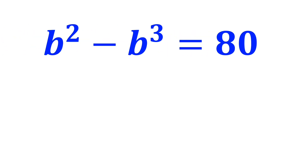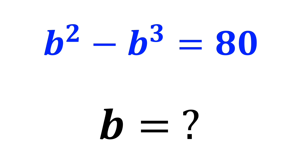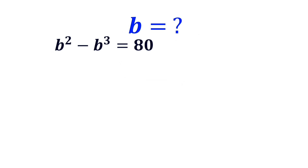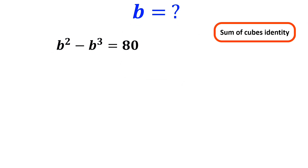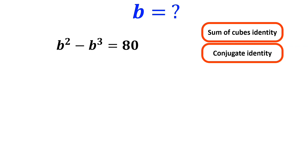If b squared minus b cubed is equal to 80, then what is the value of b? To solve this problem, we need to rewrite the equation in a form that uses the sum of cubes identity as well as the conjugate identity. Let's break it down step by step together.